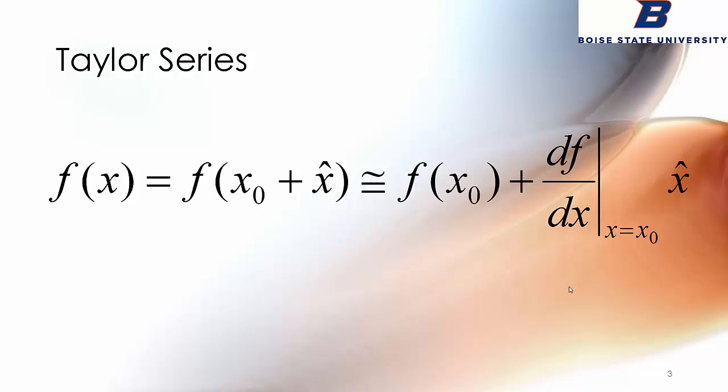Once you put in this context, we can use the Taylor series expansion of a nonlinear function. So f of x, we can make that substitution where x equals x0 plus x hat, and that can be approximated. What I've got here are just the first two terms of the Taylor series expansion. There is an infinite series that will make this exact, but if you just take the zeroth order and the first order term, you get an approximation.